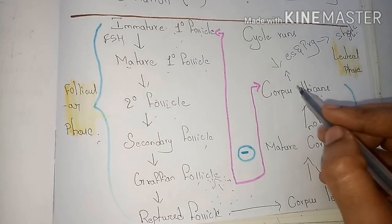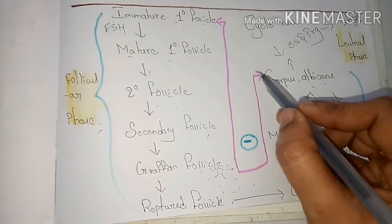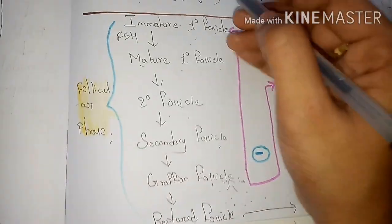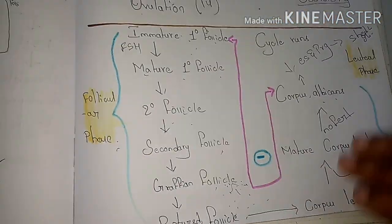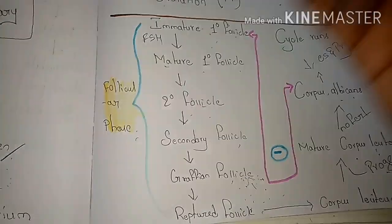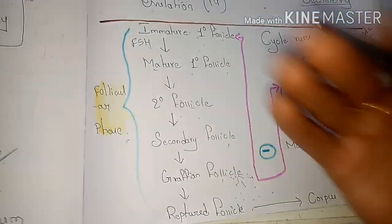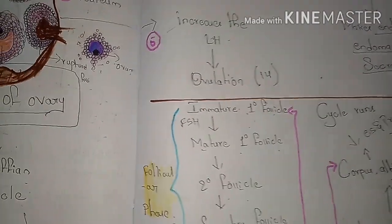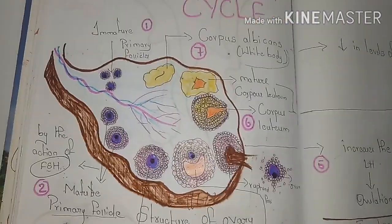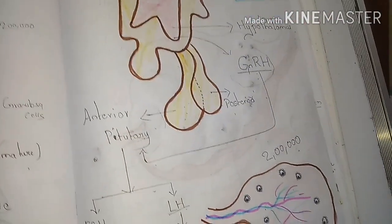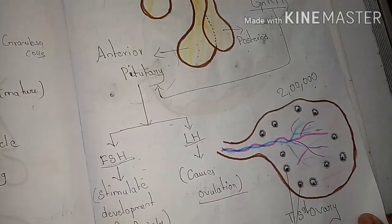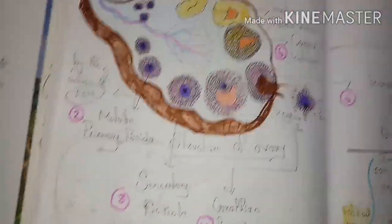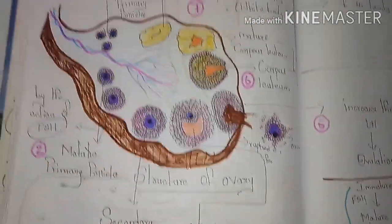Due to the shedding of the endometrium and the development of the corpus albicans, a negative feedback is produced to the hypothalamus in the brain, through which the hypothalamus runs the cycle again. This is the major role played by the ovarian cycle. In the next video, detailed information about the changes occurring in the uterus — the uterine cycle — will be covered.